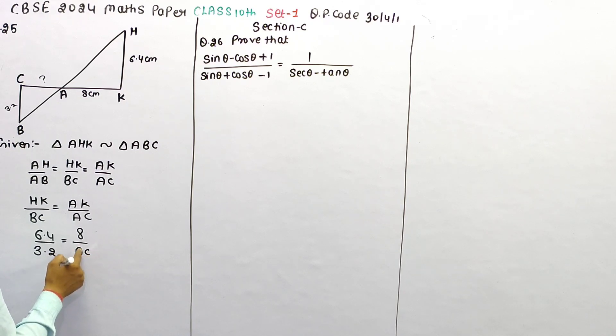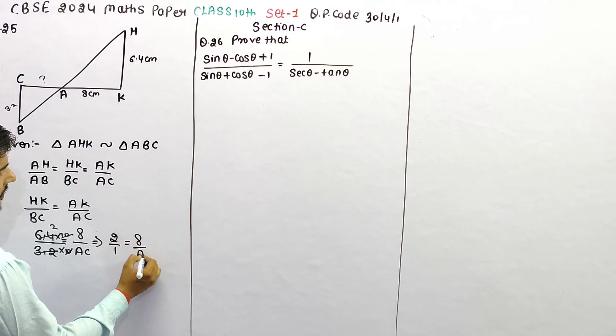To remove the decimal point, multiply by 10. Here multiply by 10. 10 by 10, 32 becomes 2 times. This gives us 2 upon 1 is equal to 8 upon AC.